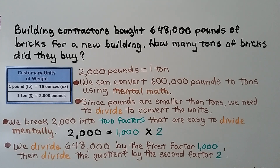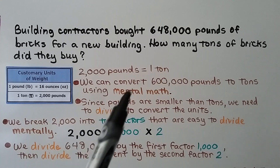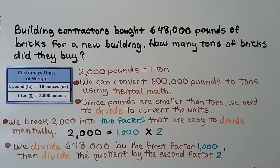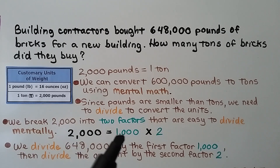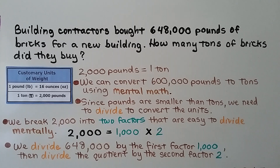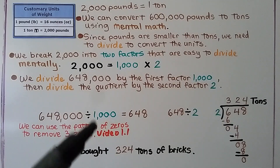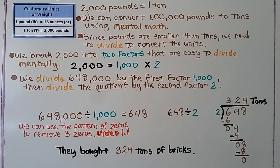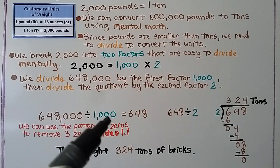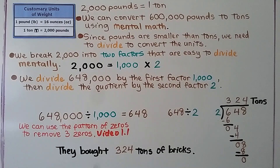Building contractors bought six hundred forty-eight thousand pounds of bricks for a new building. How many tons of bricks did they buy? Two thousand pounds equals one ton, and since pounds are smaller than tons, we divide to convert. We break two thousand into two factors: one thousand times two. First, divide six hundred forty-eight thousand by one thousand. Using the pattern of zeros, we remove three zeros to get six hundred forty-eight.